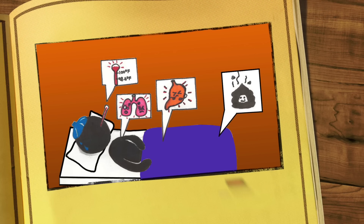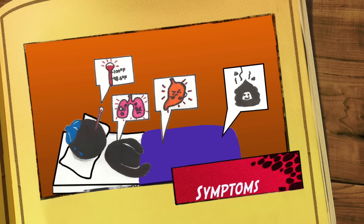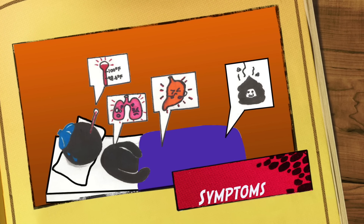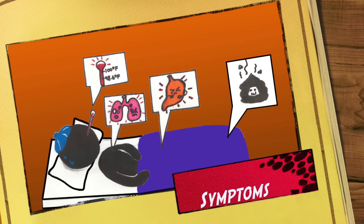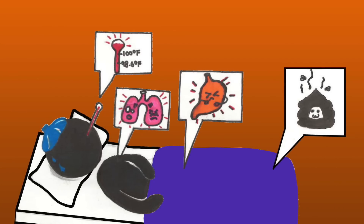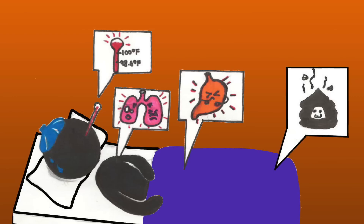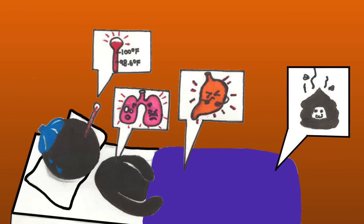There are three stages of HIV infection, each with different symptoms. Stage 1 is known as acute infection. During this time, large amounts of the virus are being produced in the body. Many people develop flu-like symptoms such as fever, sore throat, fatigue, headache, and muscle and joint pains.